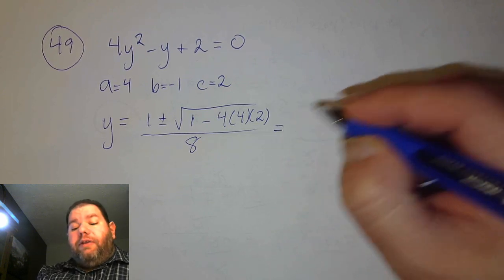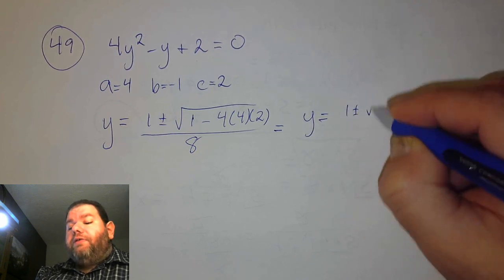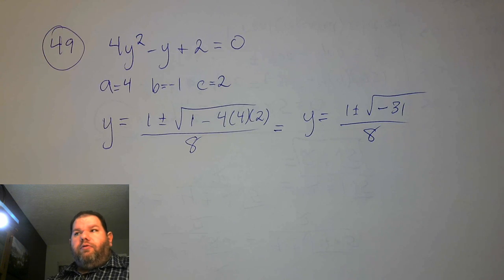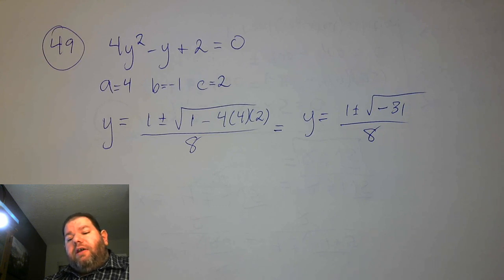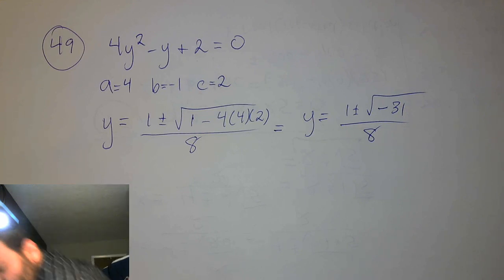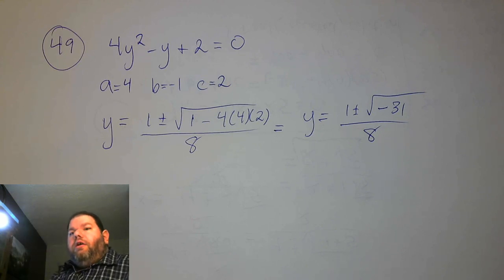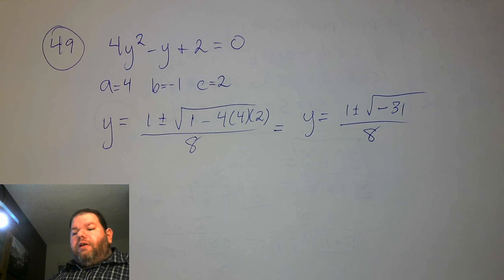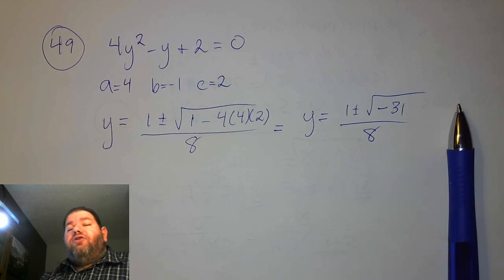The issue here is that under the radical you're going to end up with a negative 31. Rather than worrying about the square root of a negative number, the book will probably say there are no real solutions, which is technically true — both solutions in this case are complex or imaginary. We're going to look at this type of problem in more detail today, how to actually work it out and get our solution. That's our discussion for today: section 1.3.